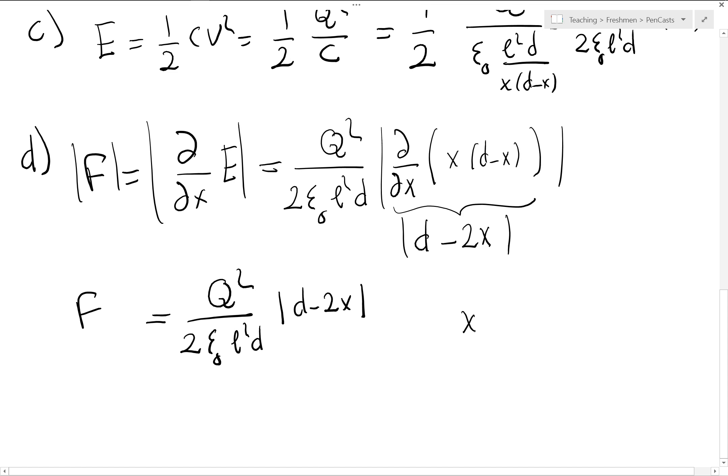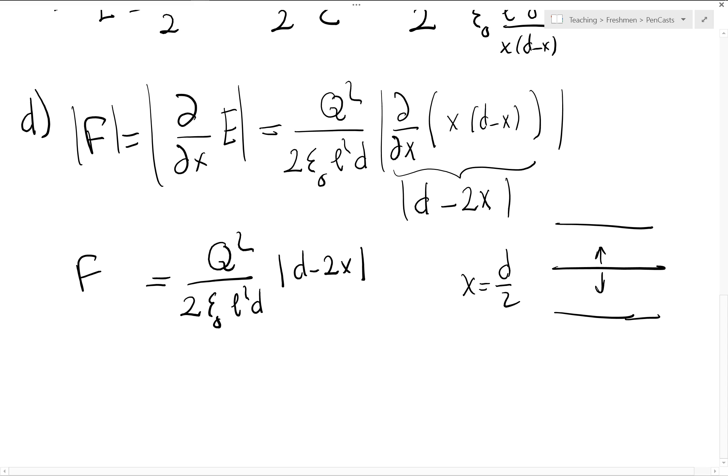And it actually makes sense. If X is equal to D over 2, my plate is in the middle of these two plates. The forces from the two plates must be equal. So the net force must be zero. But if I'm closer to the upper plate, I will be attracted to the upper plate. If I'm closer to the lower plate, I will be attracted to the lower plate.